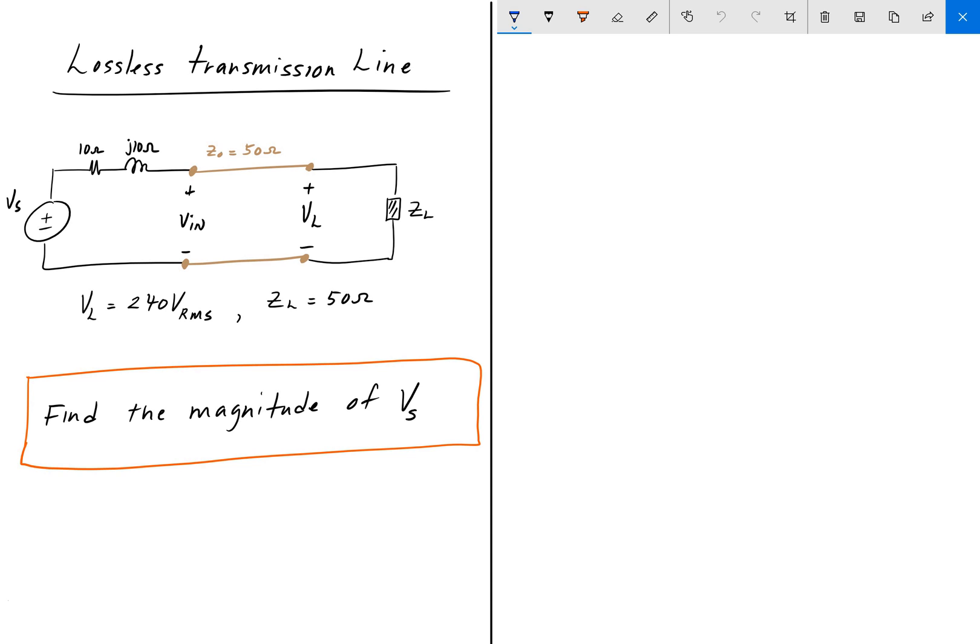We're asked to find the magnitude of Vs, the magnitude of the source, given that the voltage at the load is 240 volts RMS. As always, pause the video, give it a shot, and we'll go over the answer in a bit.